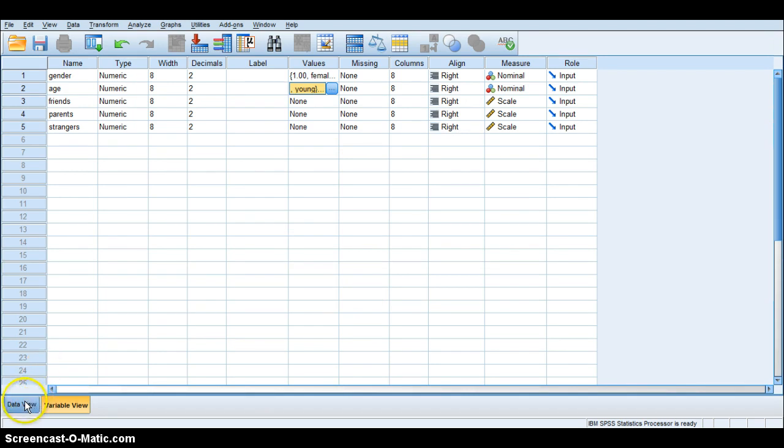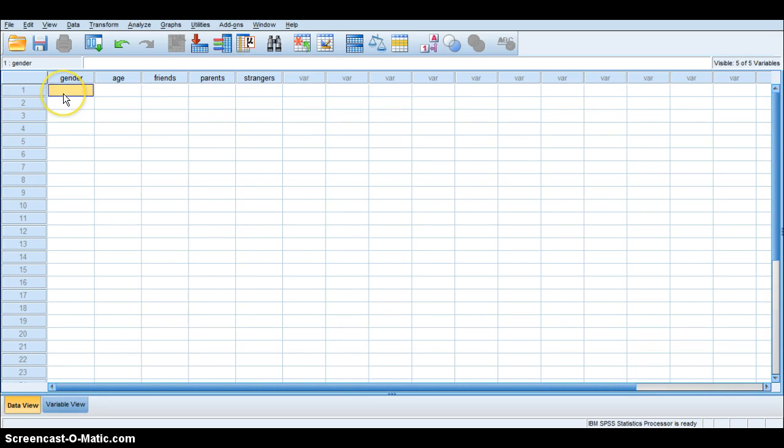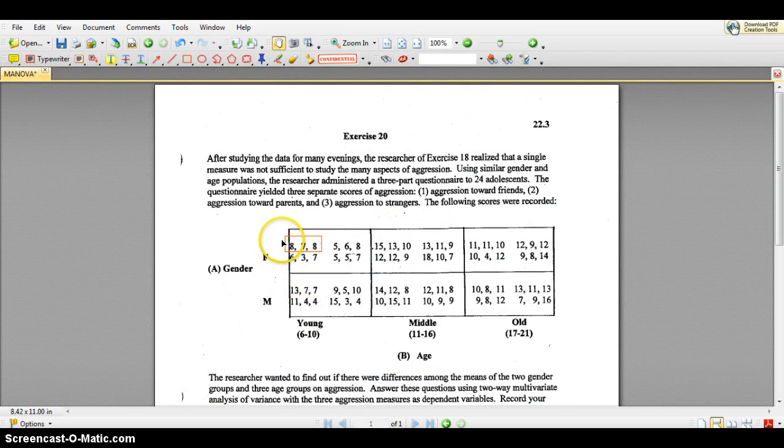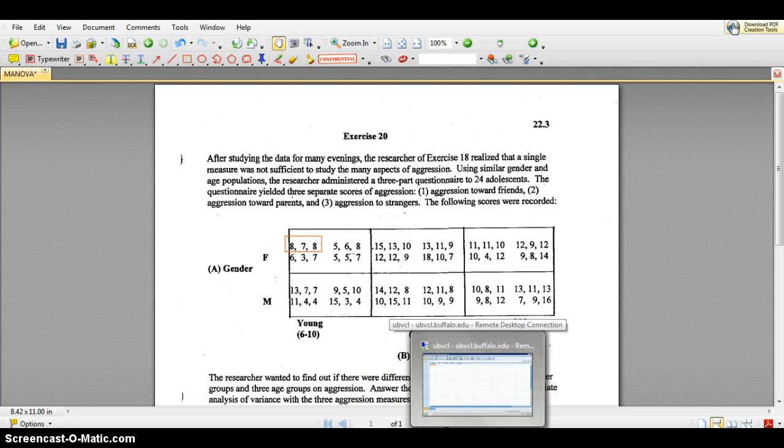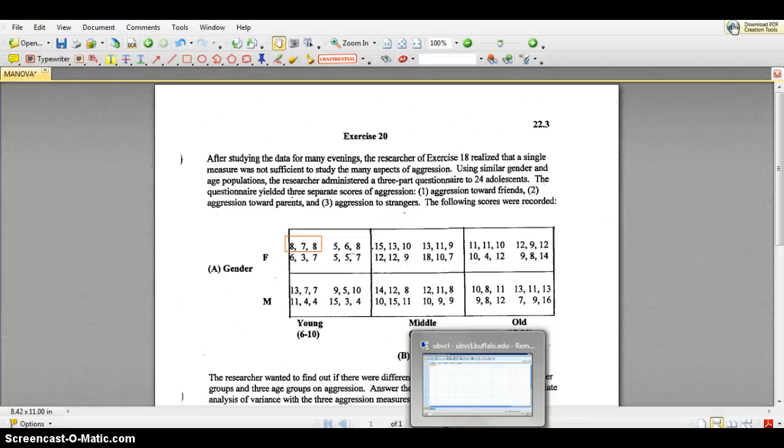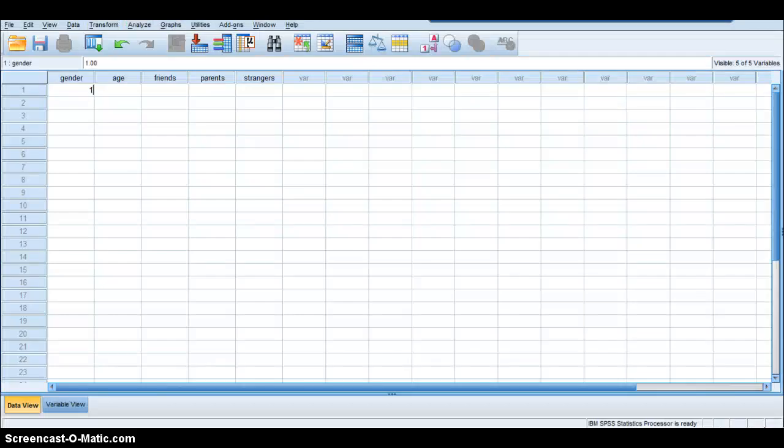So at that point, now we're going to go back into data view and start typing our data into SPSS. So in the case of that first box that I just talked about, here's that exercise 20 sheet again. Let's handle person one, this eight, seven, and eight that we talked about earlier. So that cell is the intersect of female and young. So this person is a young female. So in SPSS, I'm going to code one for female, one for young, and then I'm going to type in the dependent measures associated with that person. So for person number one, one for female, one for age, and then eight, seven, eight.